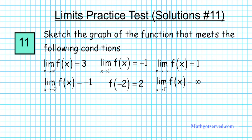The limit as x approaches infinity of the function is 3. The limit as x approaches 1 from the right of the function is negative 1. The limit as x approaches negative infinity of the function is 1. The limit as x approaches negative 2 of the function is negative 1. F of negative 2 is equal to 2. And the limit as x approaches 1 from the left of the function is infinity.